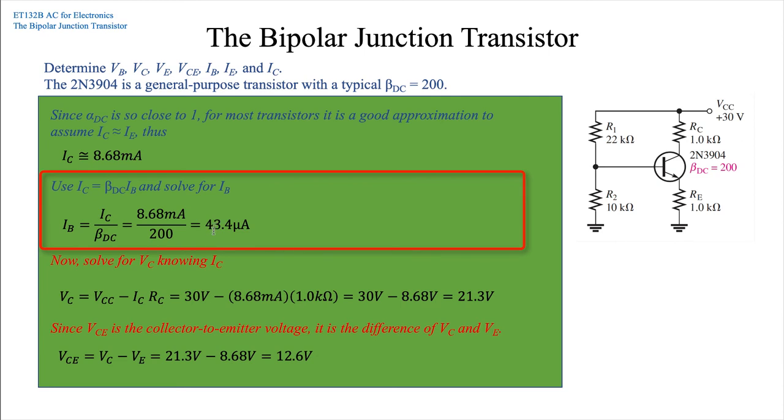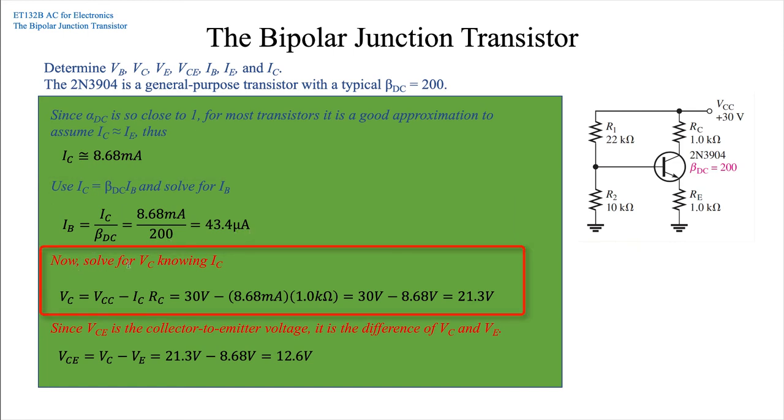Now solving for the collector voltage, knowing the collector current is 8.68 milliamps, VC equals the source VCC minus ICRC. So 30 volts minus 8.68 milliamps times 1k ohm for the resistor: 30 minus 8.68 gives us a collector voltage of 21.3 volts.